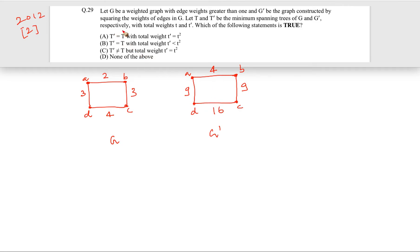Now they are saying that if the total weight of each minimum spanning tree, so for total weight of T is small t and total weight of T prime is small t prime, then which of the following is true? So firstly, whether the T and T prime, whether the two minimum spanning trees will be same or not, let us firstly see that.